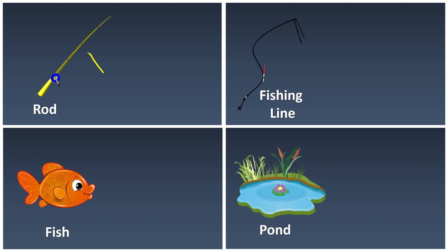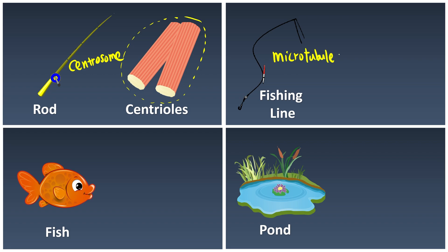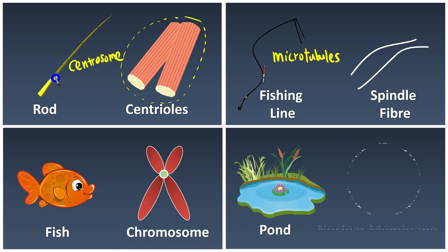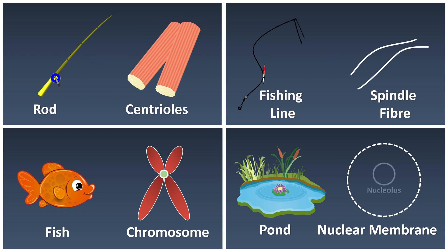The fishing rod without the line is what we call a centriole. This centriole is sometimes referred to as a centrosome in some books. A centrosome is essentially a bundle of two centrioles. Our fishing line is made out of microtubules — this fishing line is what we call a spindle fiber. The fishes in the pond represent our chromosomes, and the pond itself is our nuclear membrane, sometimes referred to as the nuclear envelope. As we know, the nucleus contains chromosomes, and inside the nuclear membrane we also have the nucleolus.